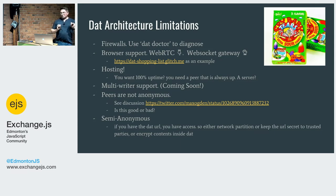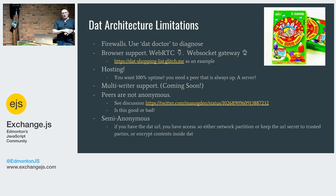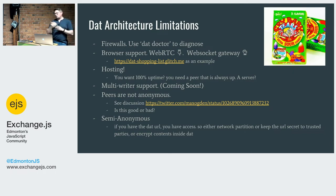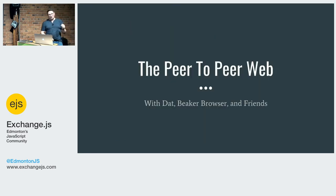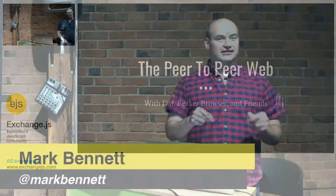Peers are not anonymous — if you need anonymity I wouldn't suggest Dat currently, though there's discussion about improvements. It's semi-anonymous: the Dat URL is your gateway; if someone has it they can access your data, so keep it secret, partition your network, or encrypt data inside the Dat. There are ways around it. Wrapping up: technology is political — I feel Dat gives us a new way to rebuild architectures for a better world. Let's build some cool apps.